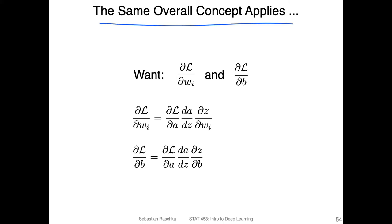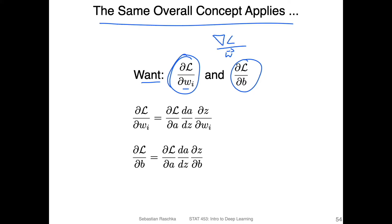What we want is the partial derivative of the loss with respect to a weight w_i, or the gradient of the loss with respect to the weight vector. We also want the partial derivative of the loss with respect to the bias unit. With these partial derivatives, we can use stochastic gradient descent to update the weights, the same as with Adaline, linear regression, and logistic regression.